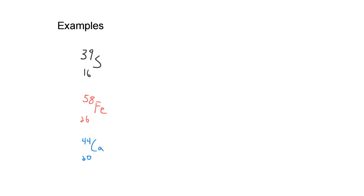So here I have a few atoms written out in isotope notation. Let's see if we can figure out what's going on with each of these and how many protons and neutrons they each have.